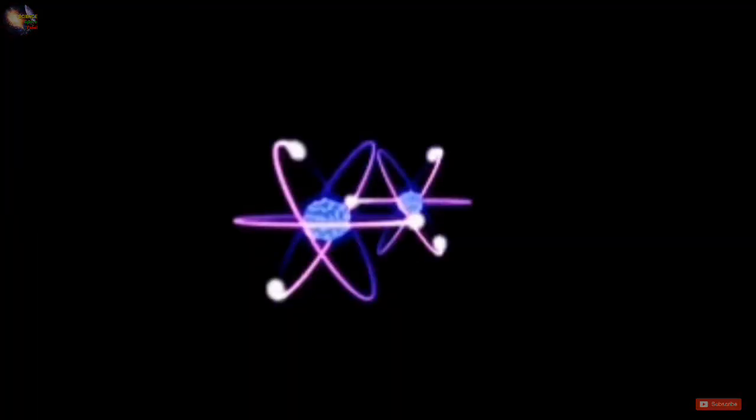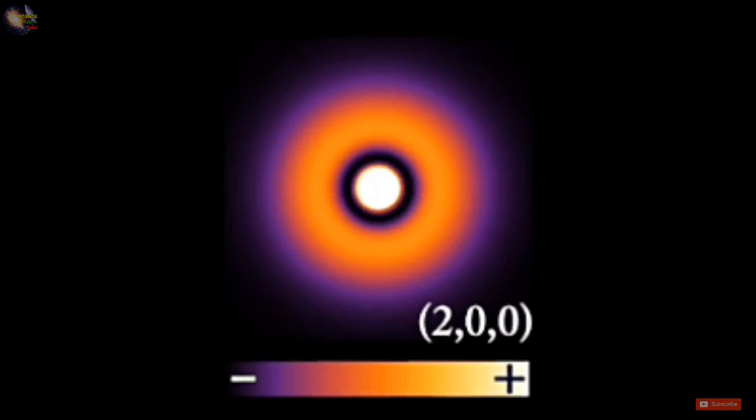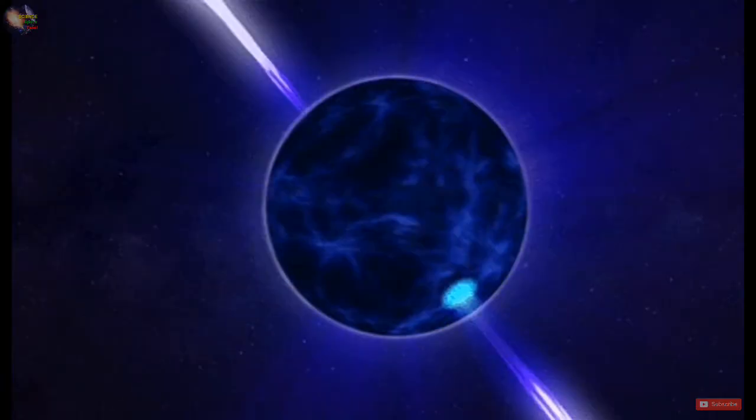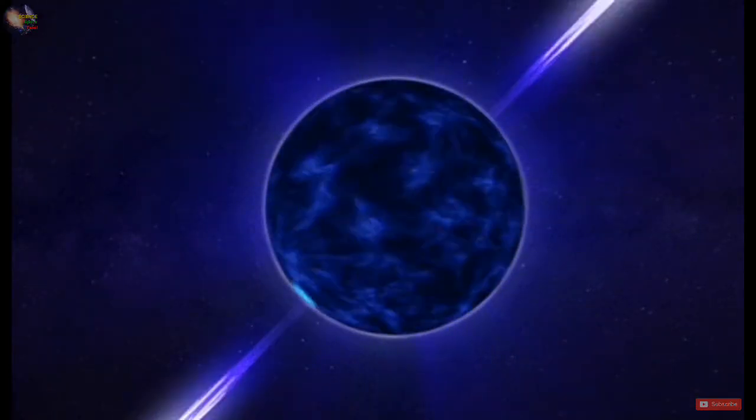Because of this extreme temperature, unusual nuclear processes may take place. Hydrogen may fuse to produce different mixtures of isotopes than in ordinary stars. The lifespan of these stars is estimated to be in the range of 100,000 years.